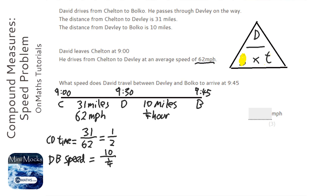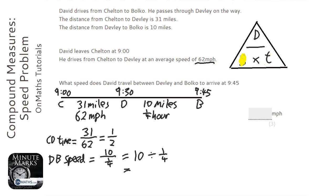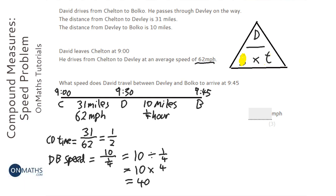Now, over just means divide. So this is the same as 10 divided by a quarter. How many quarters are there in 10? If you're good with fractions, you'll know you can do same change flip. Same change flip — 4 over 1 is just 4. And that's 40. So you'd have to travel at 40 miles per hour. You can do that on the calculator or use the non-calculator method, which I've shown here.